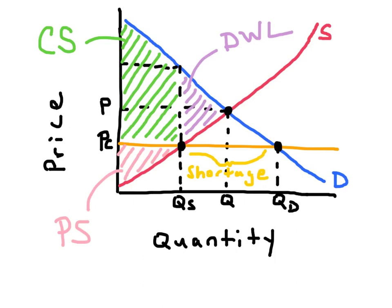As a result of the price ceiling and the misallocation of resources, we end up with a loss of efficiency. This inefficiency is known as dead weight loss — that is the purple triangle that you see here.